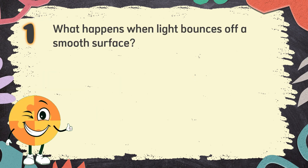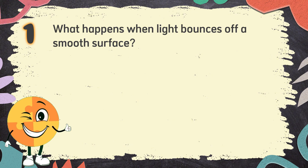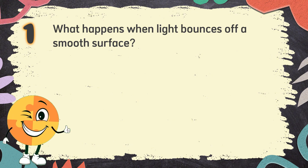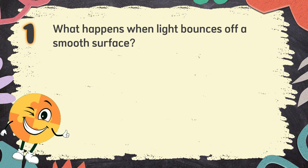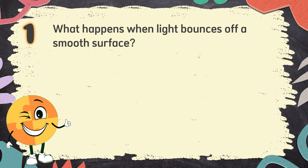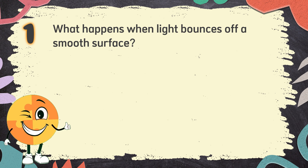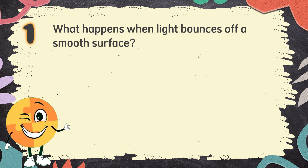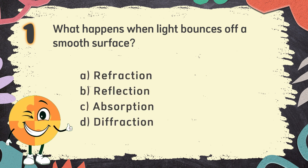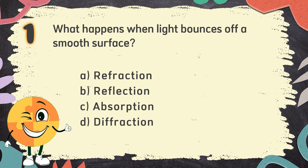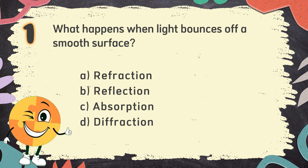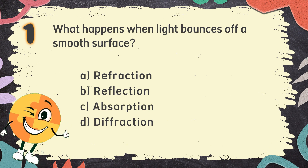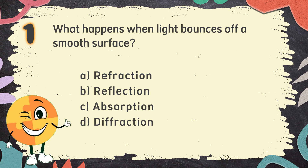Number 1. What happens when light bounces off a smooth surface? The choices are: A. Refraction, B. Reflection, C. Absorption, D. Diffraction.